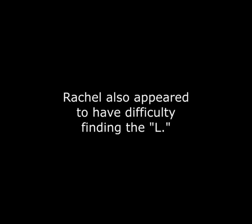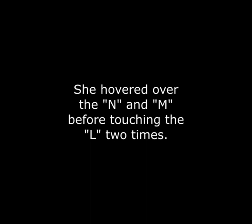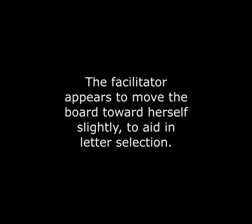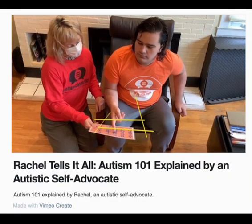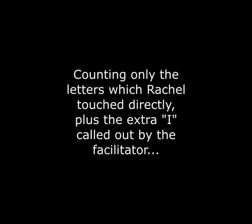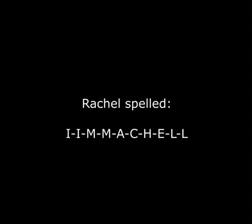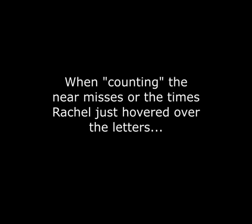Rachel also appeared to have difficulty finding the L. She hovered over N and M before touching L two times. The facilitator called out L once. The facilitator appears to move the board toward herself slightly to aid in letter selection. Counting only the letters Rachel touched directly, plus the extra I called out by the facilitator, Rachel spelled I-I-M-M-A-C-H-E-L-L. When counting the near misses, she spelled out I-I-M-M-R-R-R-R-R-A-A-C-H-J-N-E-N-M-L.